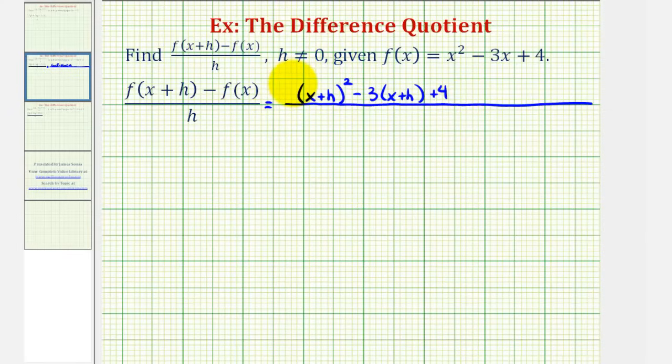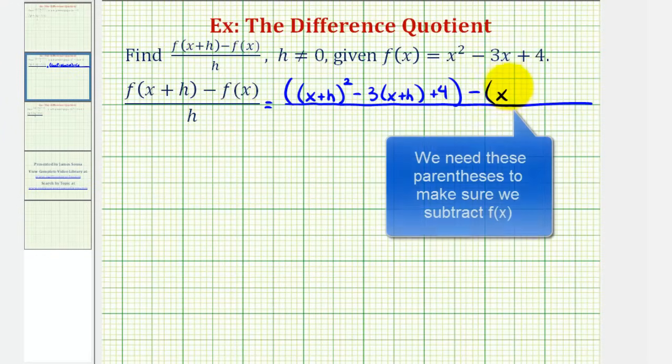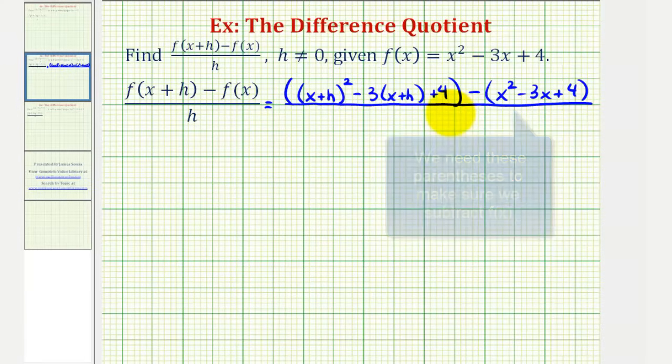Let's put this in parenthesis to keep things clear. And now we still have to subtract f of x, so we'll have minus the quantity x squared minus three x plus four. All this is divided by h.